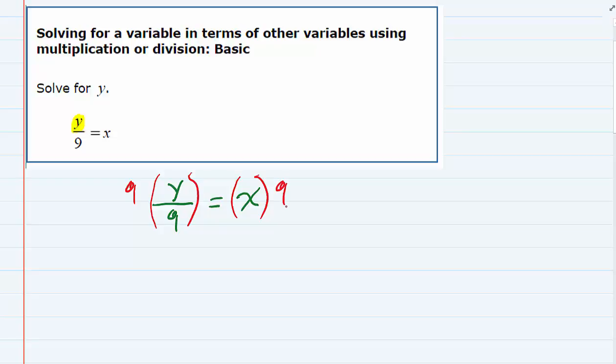And then on the left-hand side, I can see that these 9s, 9 divided by 9, those cancel out. So, I'm left with just the y on the left-hand side of our equation, and that's what I wanted.